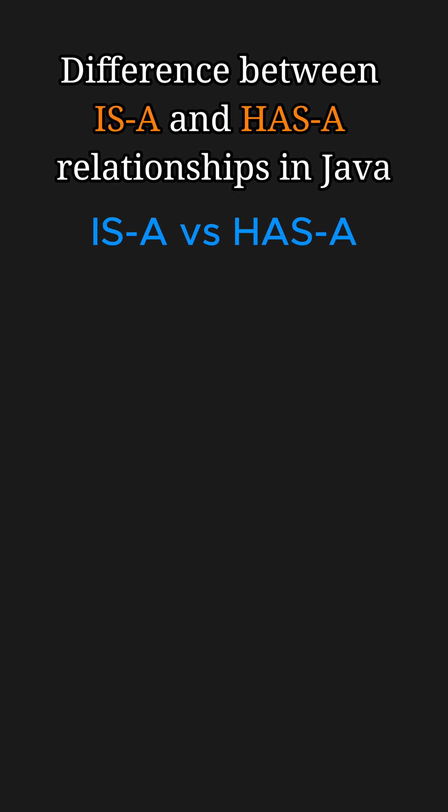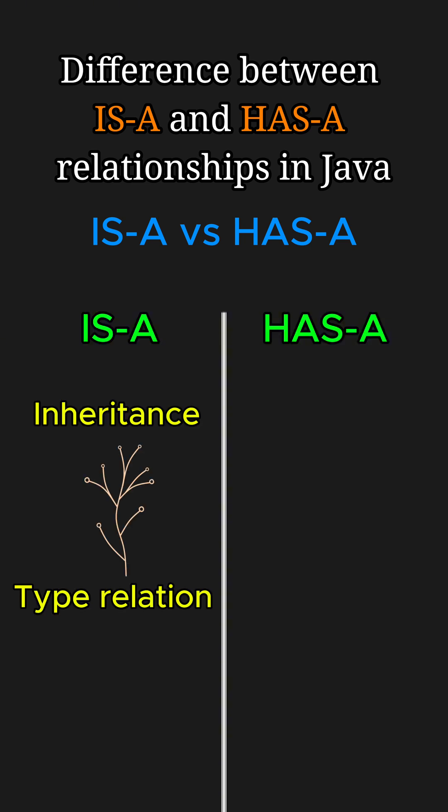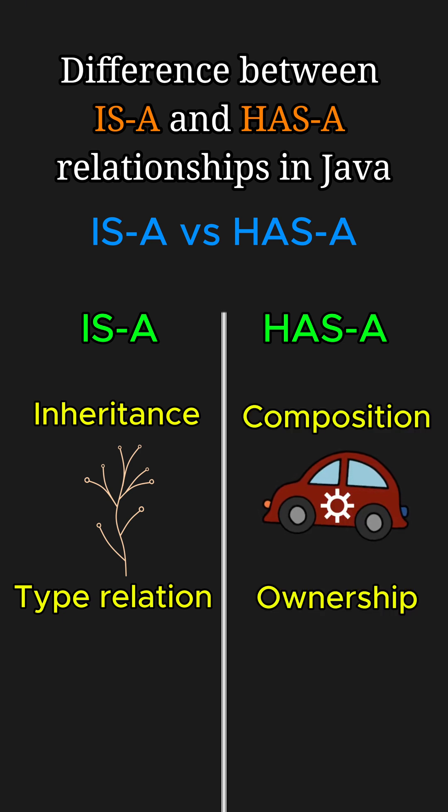In terms of differences, the is-a relationship focuses on inheritance and defines type relationships. On the other hand, the has-a relationship focuses on composition and defines ownership.